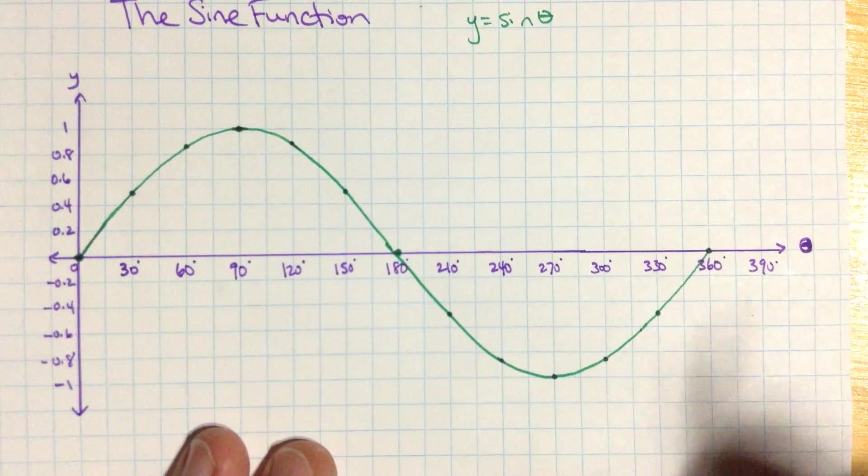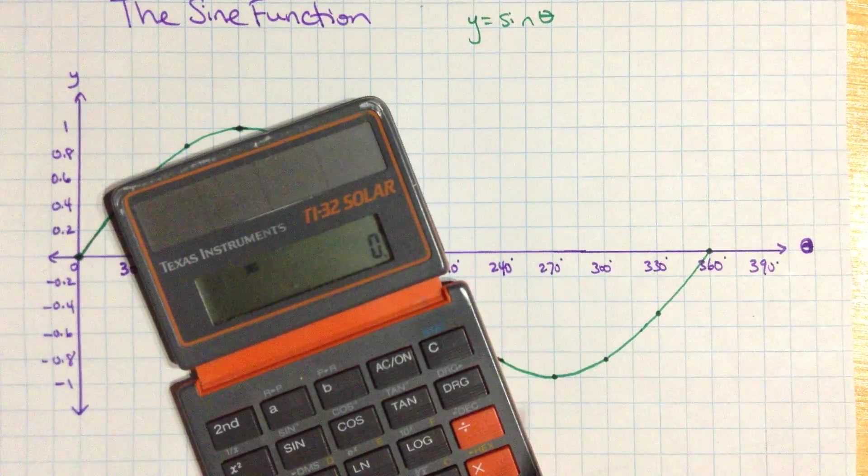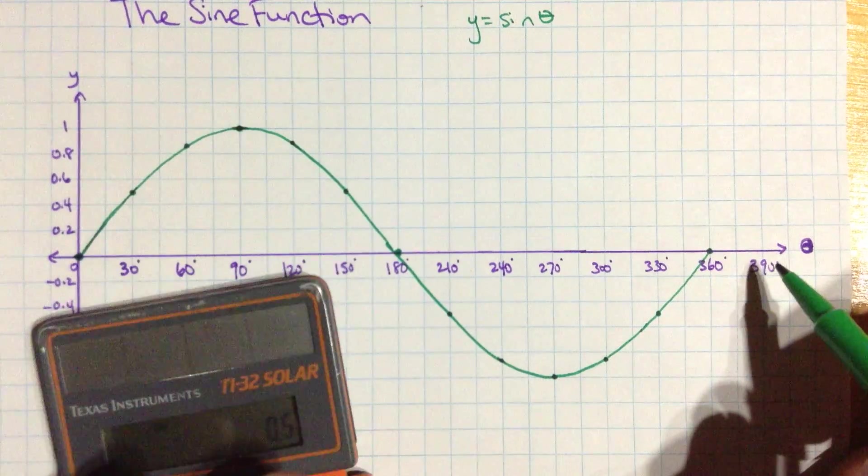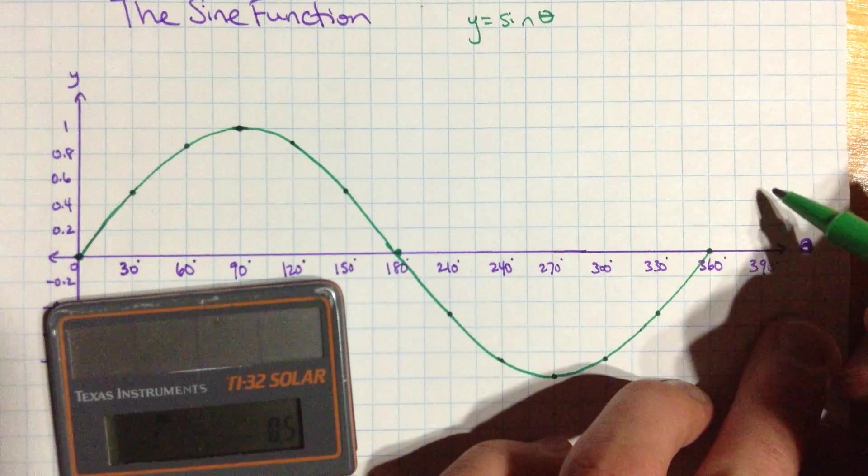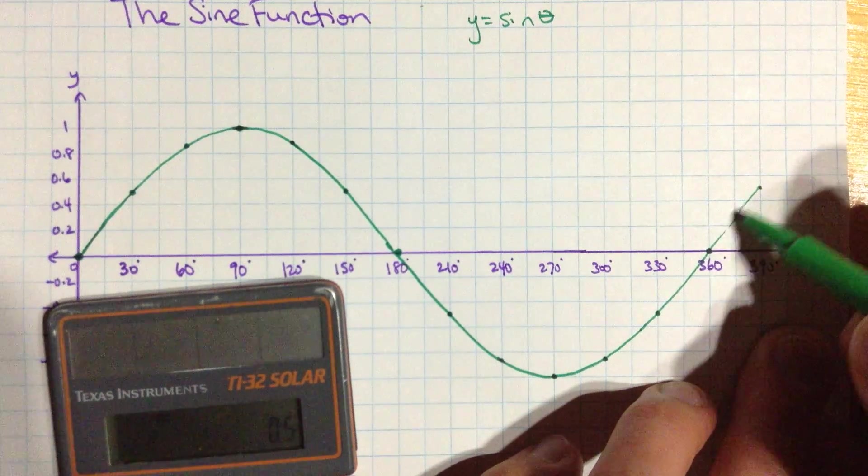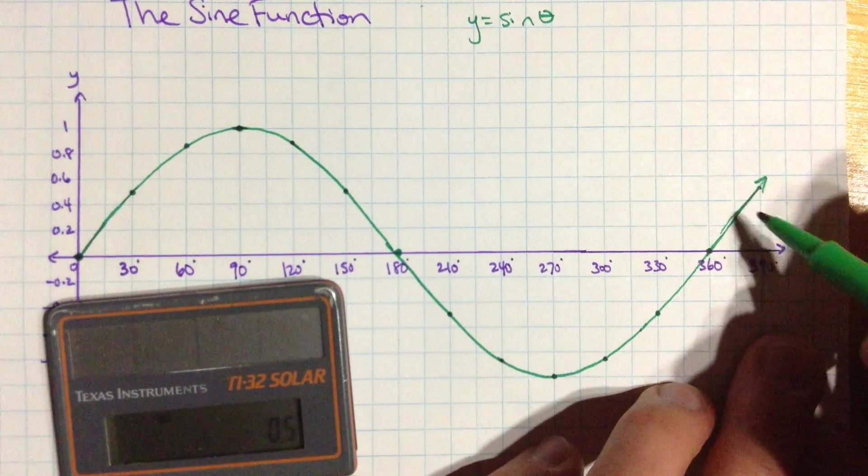And then, let's do the next point, 390 is going to be, oh look, it's a half again, because this is sort of wrapping around the unit circle again. And so, this is where the cycle continues. So that continues like that. I'll draw a little arrow.